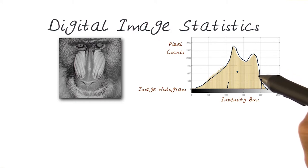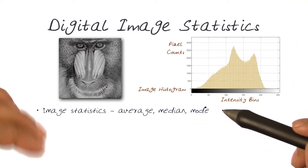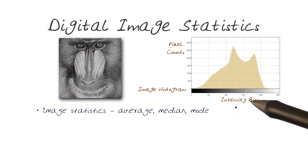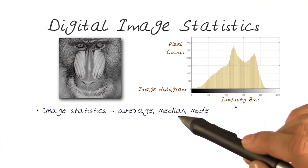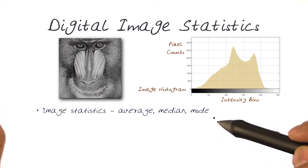We don't have to do this for the entire image. We can do statistics on the whole image - compute the average for the entire image, the median, or any other kind of statistical information.